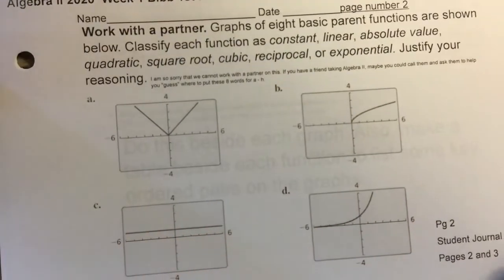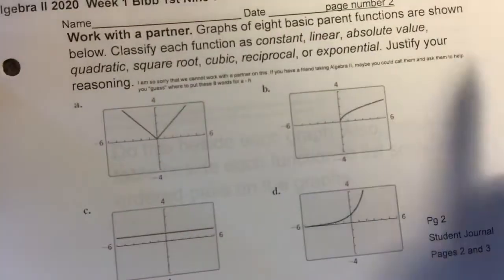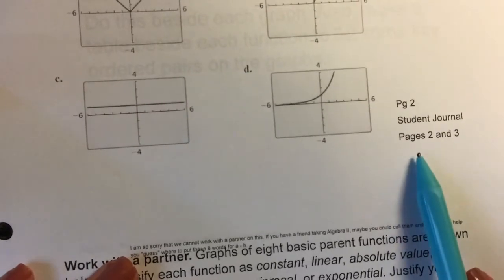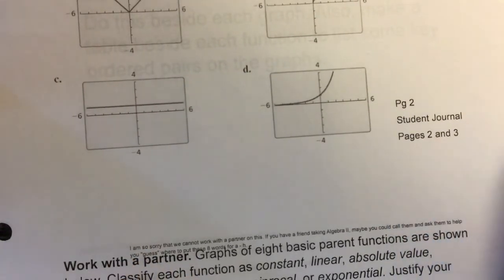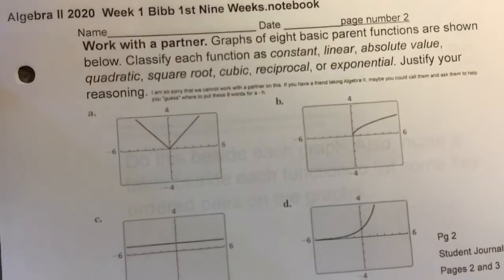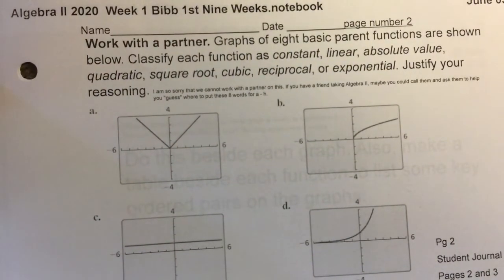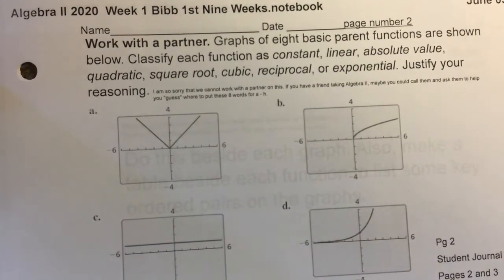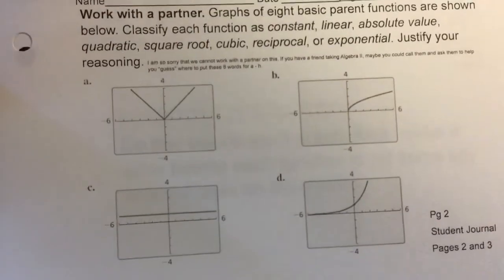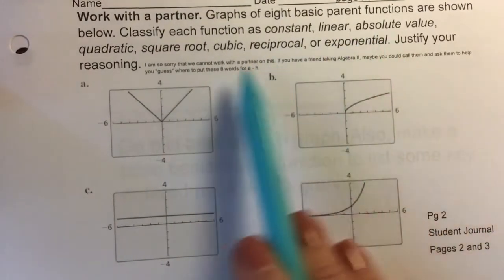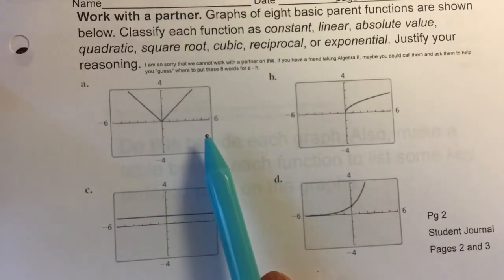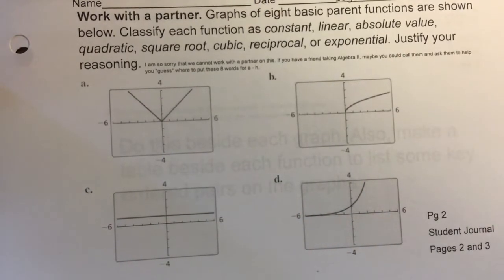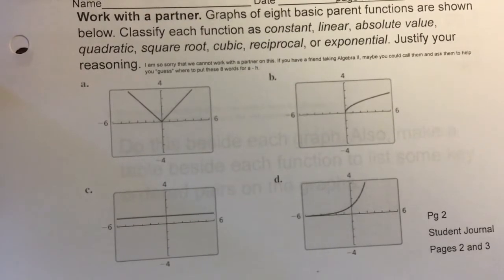This first part of the lesson, this is page number two, the student journal page. This first part I'd like you to take the time, you can pause the video now. I'm going to pause the video as well and go through for a through h. If you will put one of these words on a through h, you can guess some of these. There's one on here I absolutely believe that every one of you will know. Take the time to go through and label each of these questions a through h.